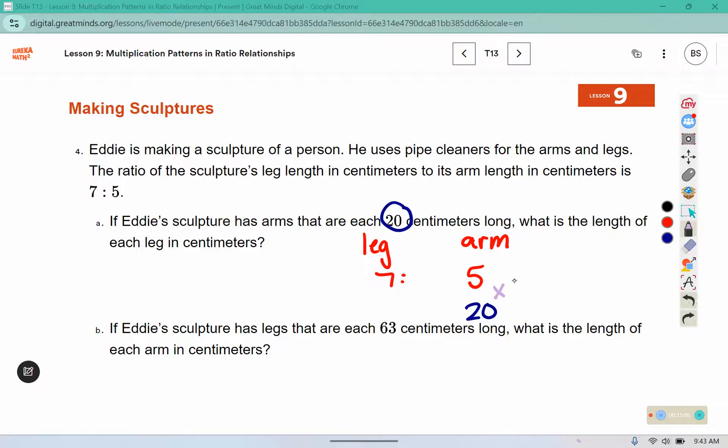Well, 5 times 4 is 20. So I need to do the same thing over here. And 7 times 4 is 28. So what is the length of each leg in centimeters? 28 centimeters.